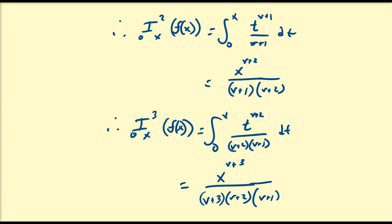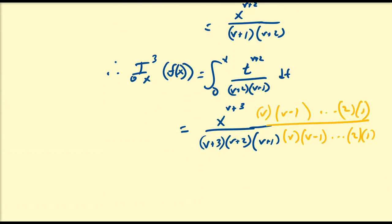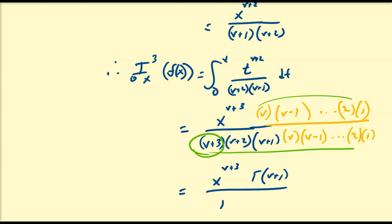I'm going to multiply top and bottom by ν, (ν−1), all the way down to 2 times 1, so I can express this in terms of the gamma function, since ν need not be an integer. If ν is an integer, the denominator is (ν+3)!, which is the same as Γ(ν+4), and the top is ν!, which extends to Γ(ν+1). So this equals x^(ν+3) · Γ(ν+1) all divided by Γ(ν+4).